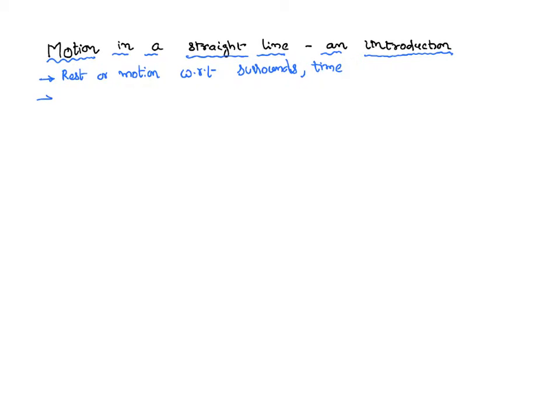Where do you observe this body? We will be seeing the bodies on the earth — a person in a bus, a vehicle, a body in a vehicle. All these things where you observe the body is called a frame of reference. Frame of reference is a system with respect to which we are observing the body and trying to identify whether that body is in the state of rest or in the state of motion.